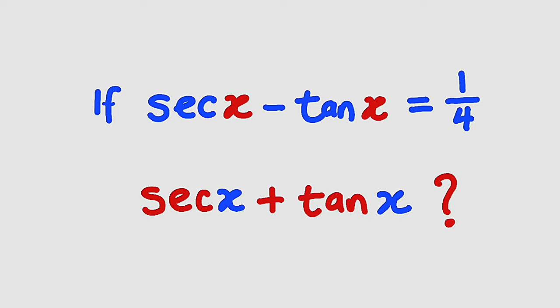Hello, good day viewers. Someone sent this question to me on my Facebook page yesterday. The question is: if secant x minus tangent x equals 1 divided by 4, what is the value of secant x plus tangent x? This question is very simple if you have mastered some of the trigonometric identities.